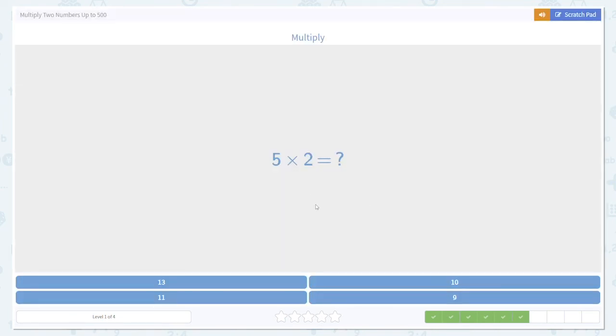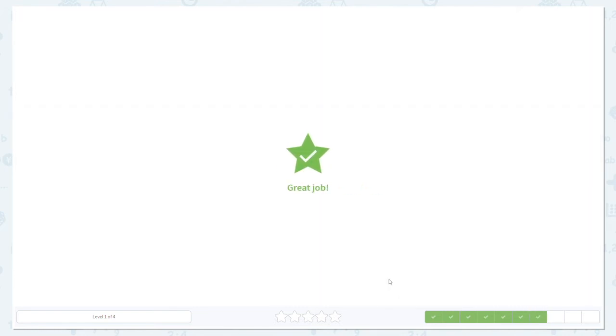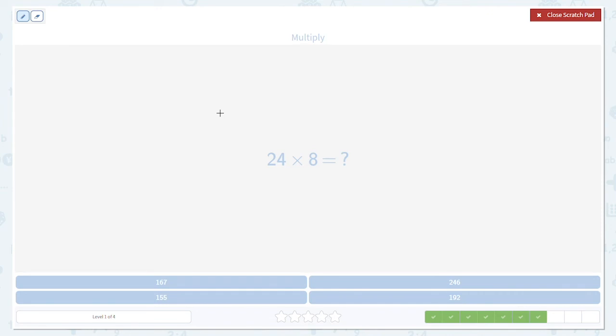This is another easy one. 5 times 2 is the same thing as 10. This one's a little bit harder. 24 times 8. 4 times 8 is 32. So we write down the 2. Carry the 3.